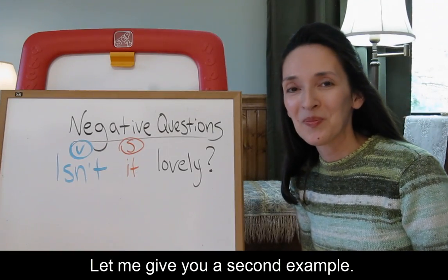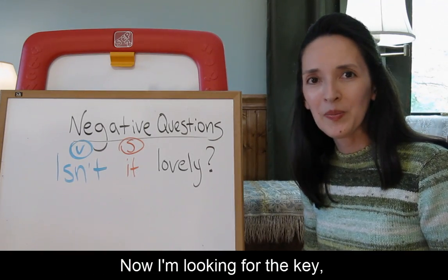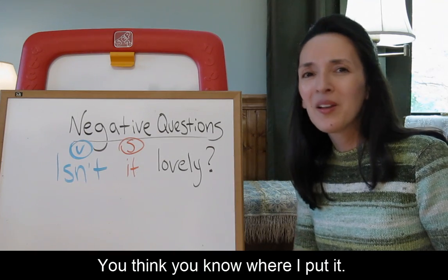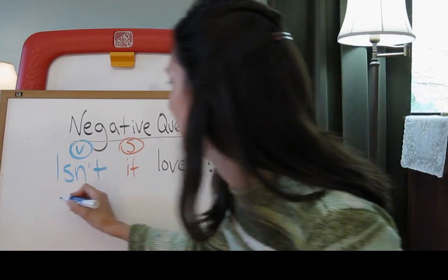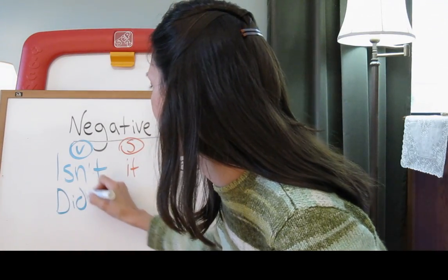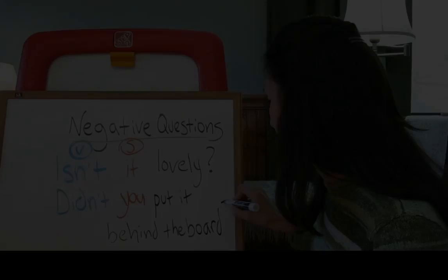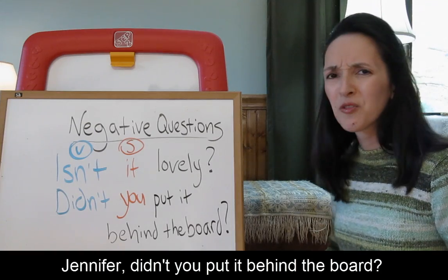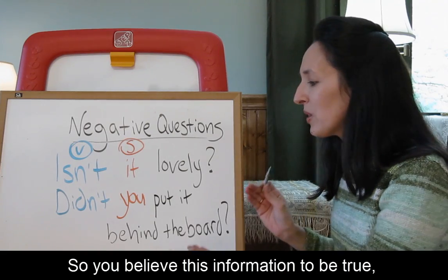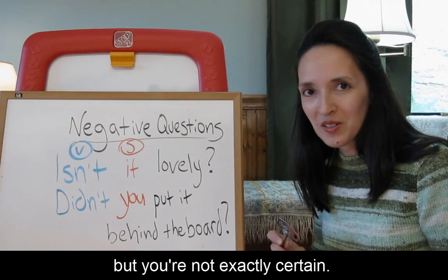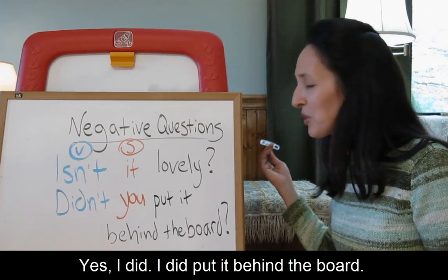Let me give you a second example. I'm going to show you this key and put it there. Now I'm looking for the key and I don't know where it is. Do you? You think you know where I put it. Maybe you're not certain exactly, so you ask: 'Jennifer, didn't you put it behind the board?' 'Did I? Oh, yes, I did. Thank you.' So you believe this information to be true, but you're not exactly certain. You asked me to confirm. I find the key. I confirm. You're right. Yes, I did — I did put it behind the board.